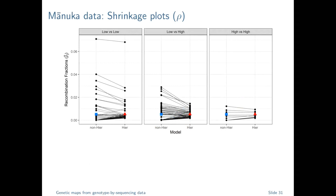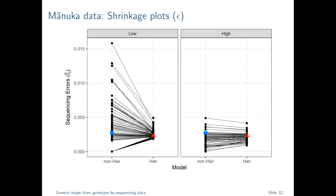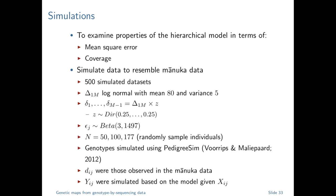These diagnostic plots were mainly to confirm everything was working as expected — comparing MLE estimates to hierarchical model estimates. We see more shrinkage when low-read-depth markers are involved, which is exactly what we'd expect, both for the recombination fraction and sequencing error. When we have higher-depth information, there's much less shrinkage than with low read depth.